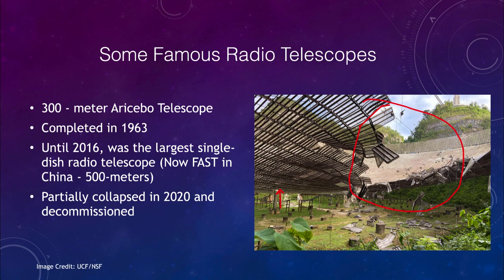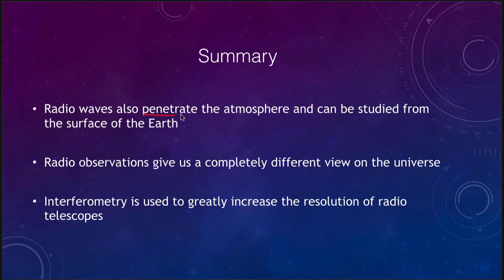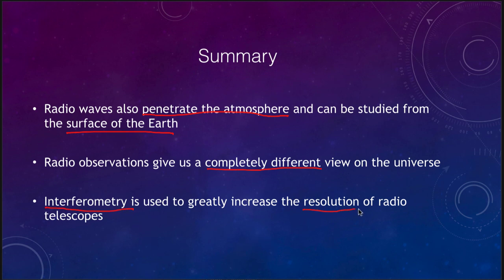To summarize what we've covered: radio waves can be observed from the surface of the Earth because they penetrate the atmosphere. They give us a completely different view of the universe, and that's very important as we're now able to observe further across the electromagnetic spectrum. We talked about interferometry and how it is used to increase the resolution of radio telescopes, making them comparable to or even better than optical telescopes, allowing us to compare objects across different wavelengths for better study. That concludes this lecture on radio astronomy — we'll be back again next time for another topic.